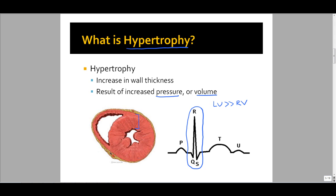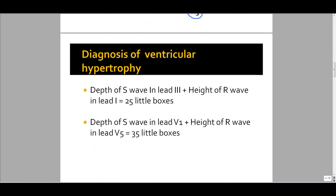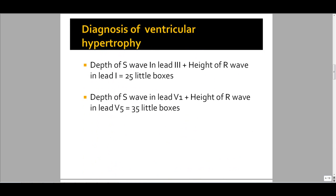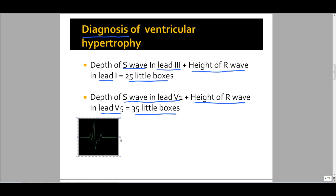The diagnosis of left ventricular hypertrophy requires the depth of the S wave in lead 3 plus the height of the R wave in lead 1 to be equal to or greater than 25 little boxes. As a refresher: the Q deflection is always the first negative deflection, the R deflection is always the first positive deflection, and the S deflection is always the first negative after the R wave. These QRS deflections are important to know in diagnosing ventricular hypertrophy.